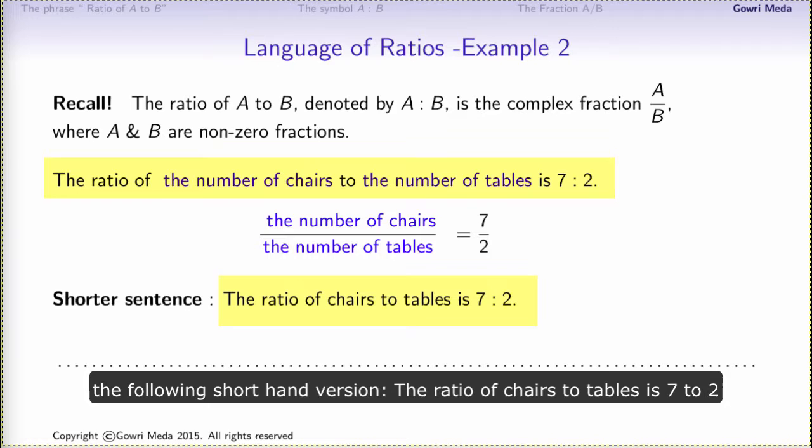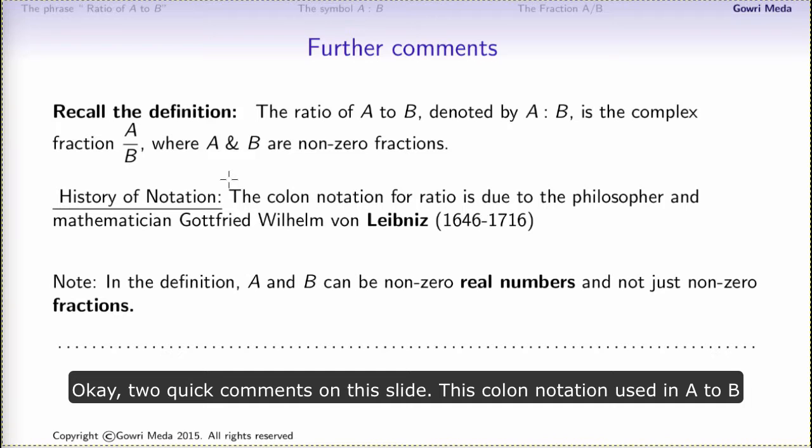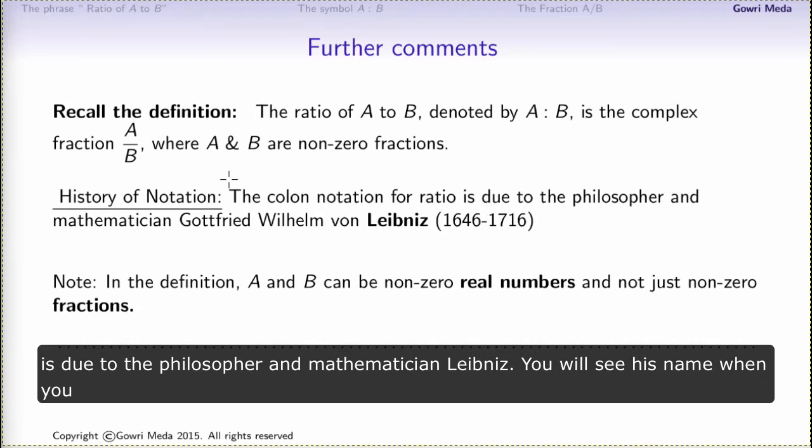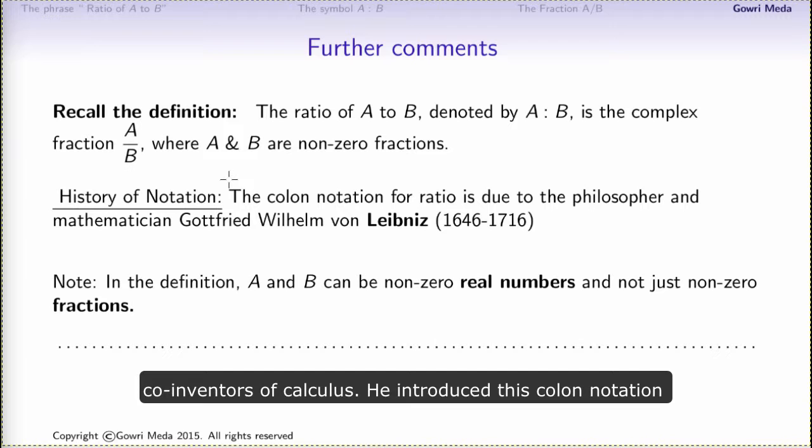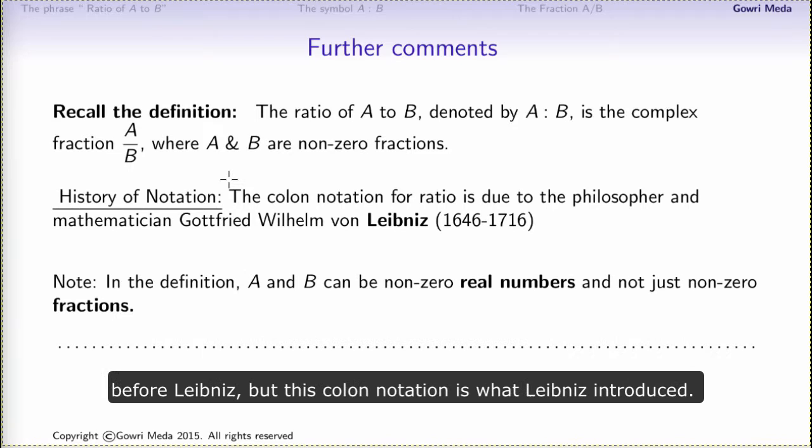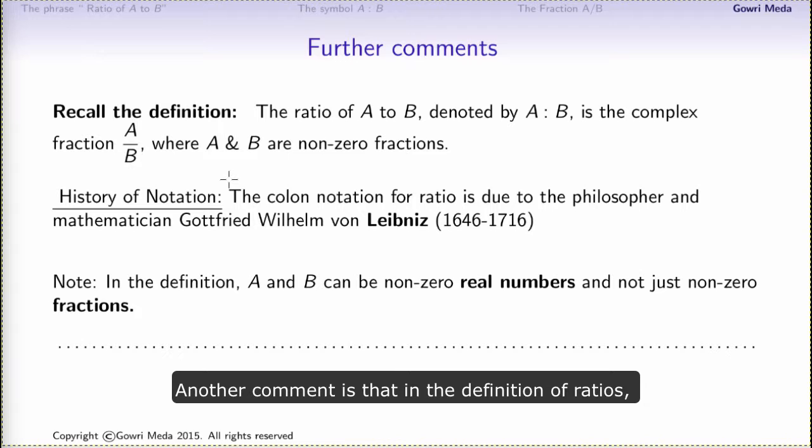Okay, two quick comments on this slide. This colon notation used in A to B is due to the philosopher and mathematician Leibniz. You will see his name when you take a calculus class in high school or college. Leibniz is one of the co-inventors of calculus. He introduced this colon notation that we continue to use today. The concept of ratios existed before Leibniz, but this colon notation is what Leibniz introduced.